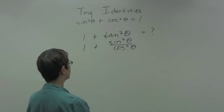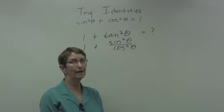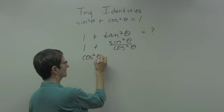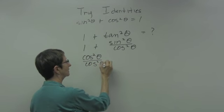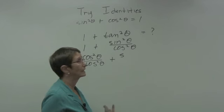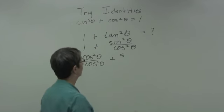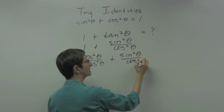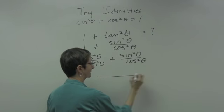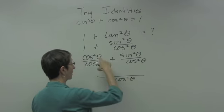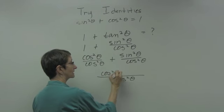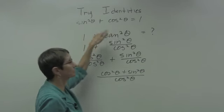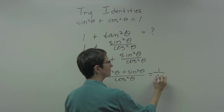1 plus sine squared over cosine squared. This time I'm going to get a common denominator — I'm going to rewrite 1 as cosine squared theta over cosine squared theta. Sometimes when you're doing these, you just have to try something: you have a fraction, you have an integer, add them together, and to add you need a common denominator first. Now that I have my common denominator, I can use that single denominator, and on top I have cosine squared theta plus sine squared theta. Cosine squared plus sine squared is 1, so this is the same as 1 over cosine squared theta.